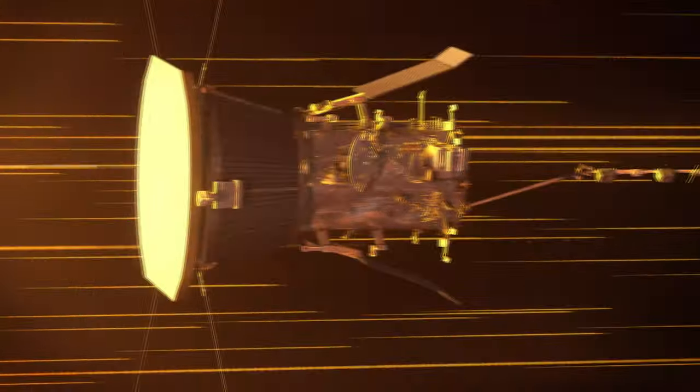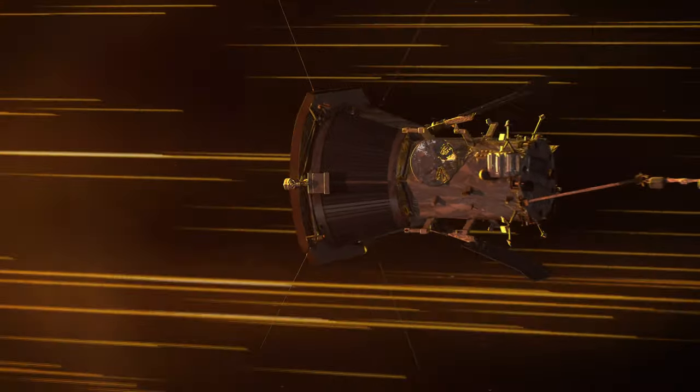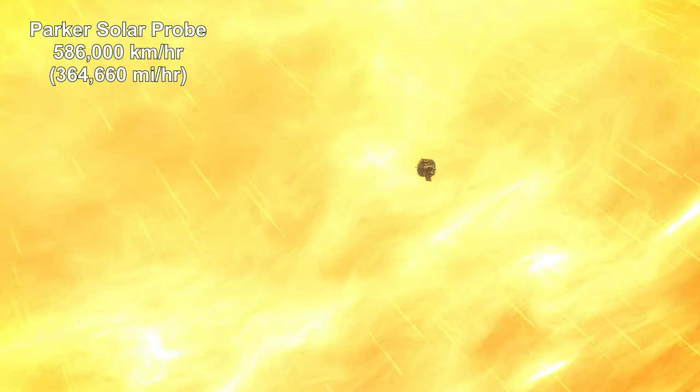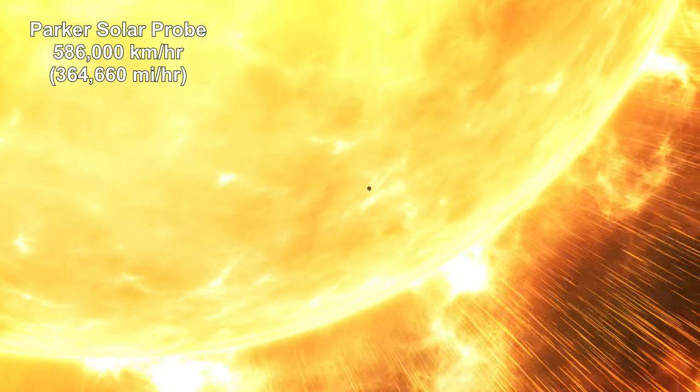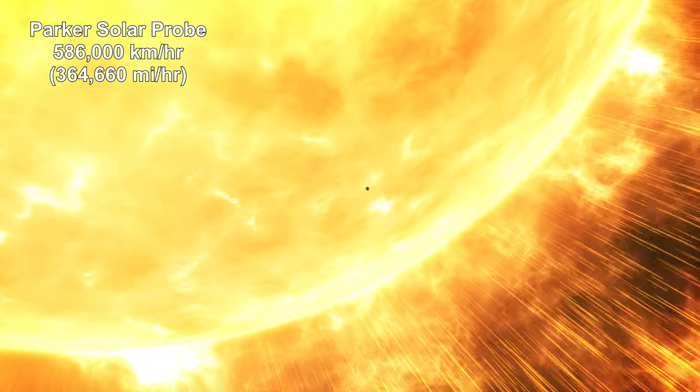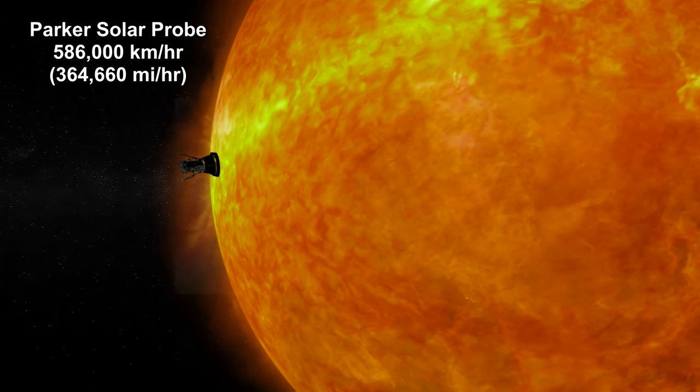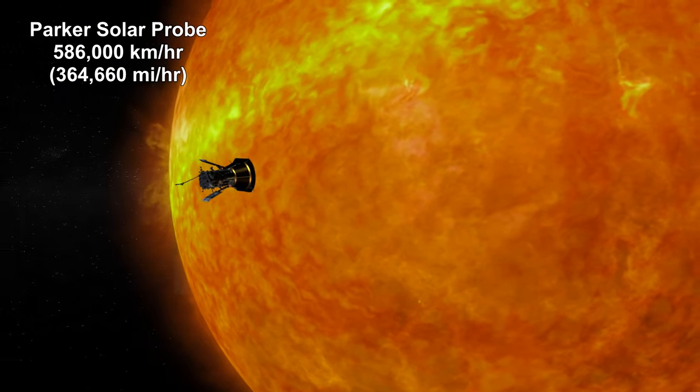But the current speed record, as of mid-year 2022, belongs to the Parker Solar Probe. On November 20, 2021, it reached a speed of 163 km per second. That's 586,800 km per hour, or 364,660 miles per hour, as it actually passed through the outer atmosphere of the Sun.